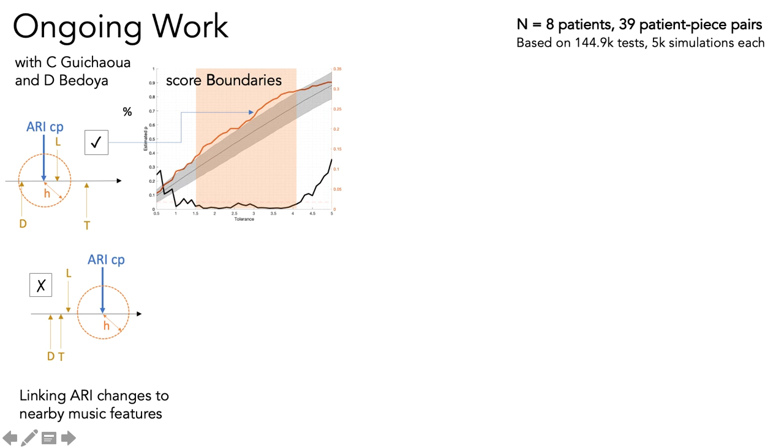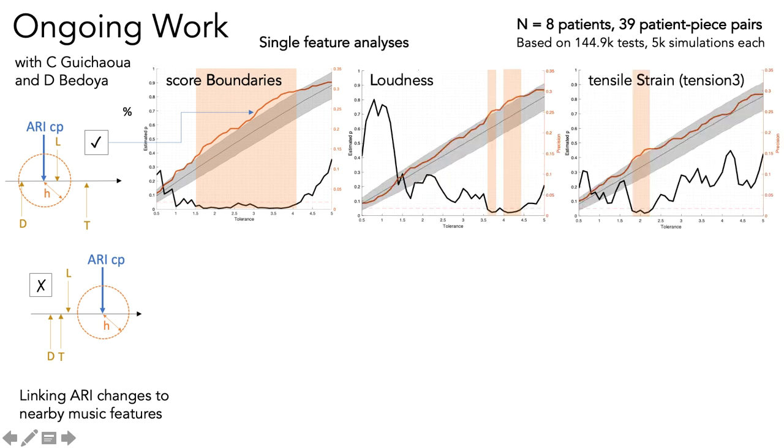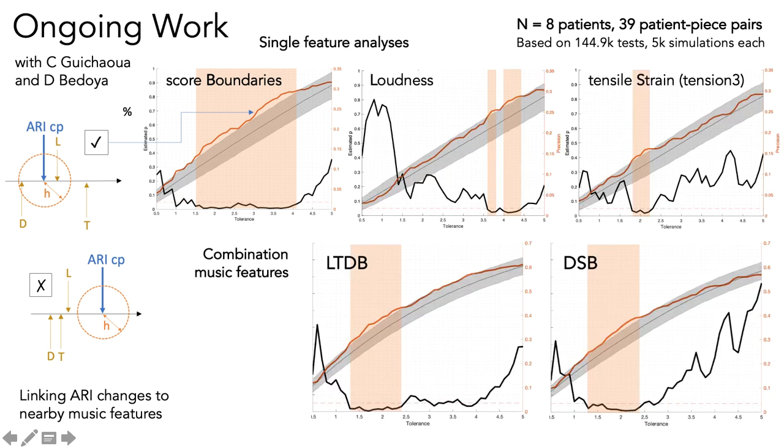We perform these tests not just for individual music features, but also combinations of music features. The orange panels highlight regions for which the features or feature sets performed significantly better than chance. Loudness was statistically significantly greater than would occur by chance.